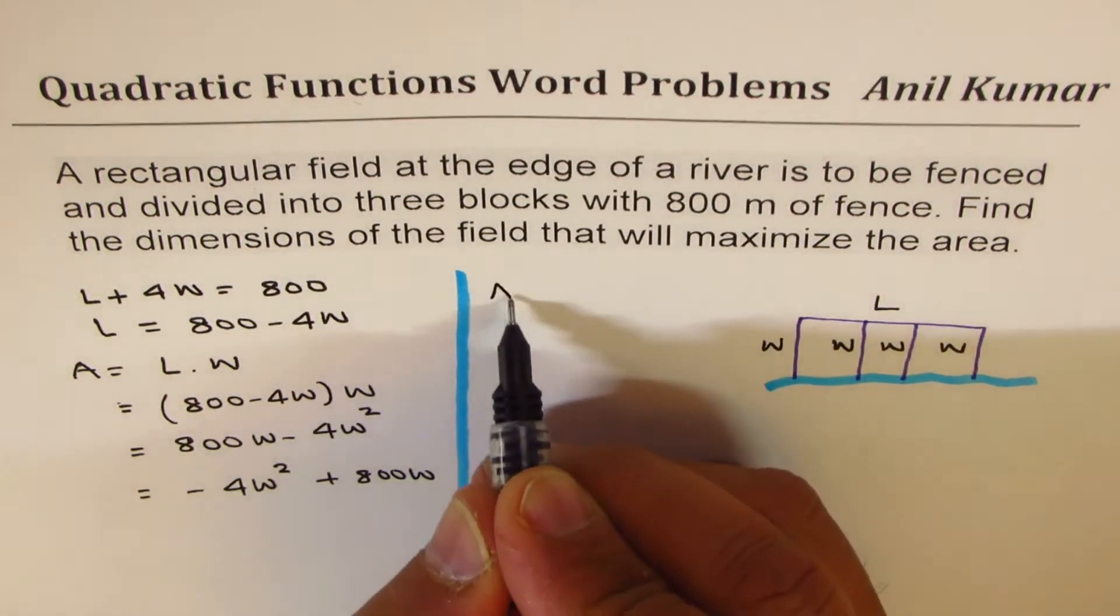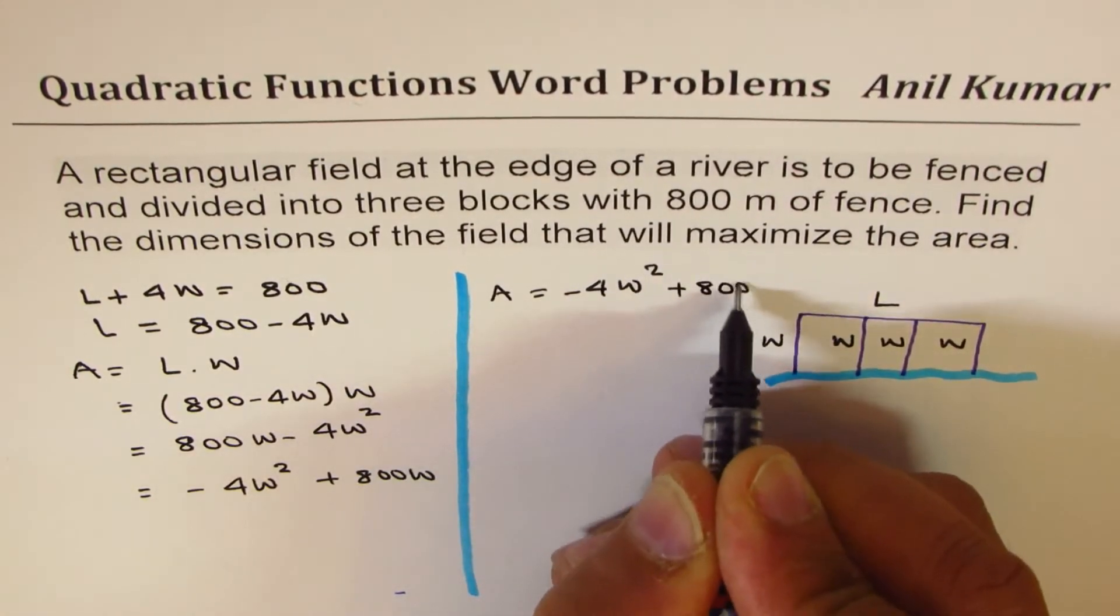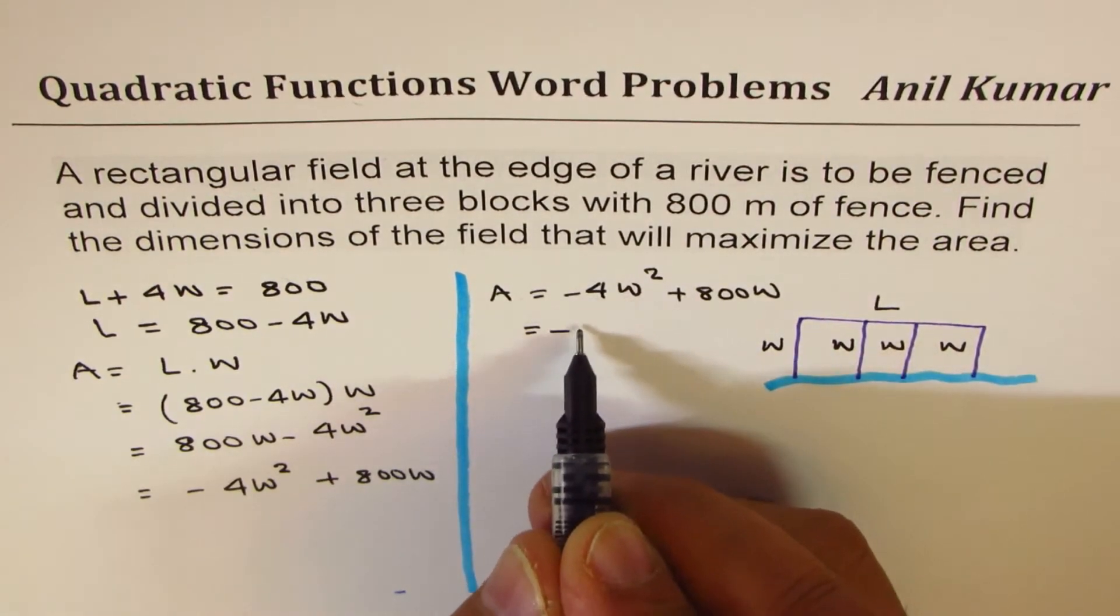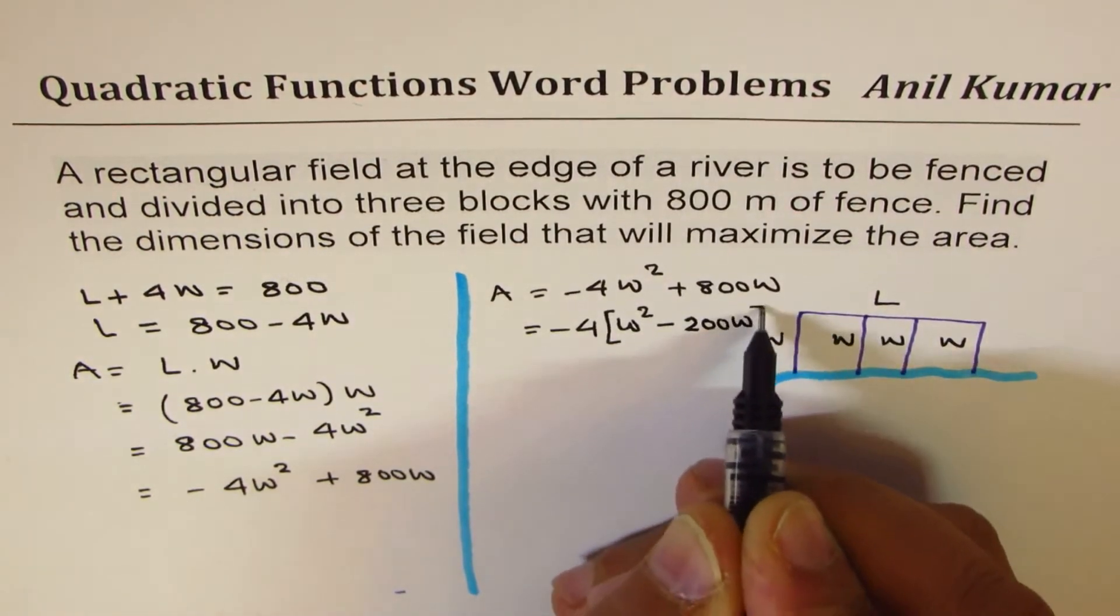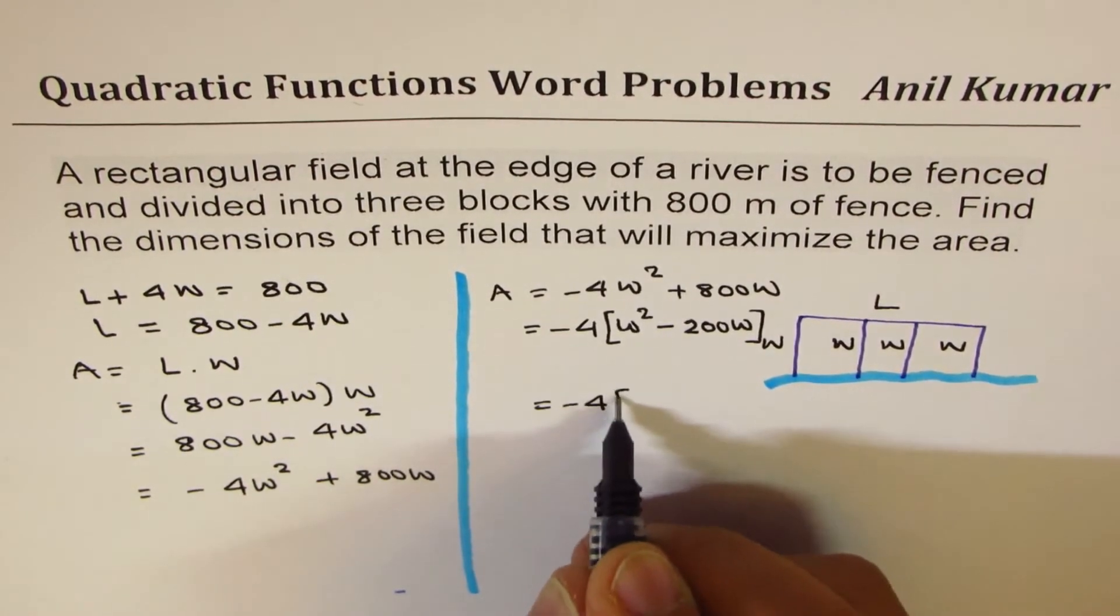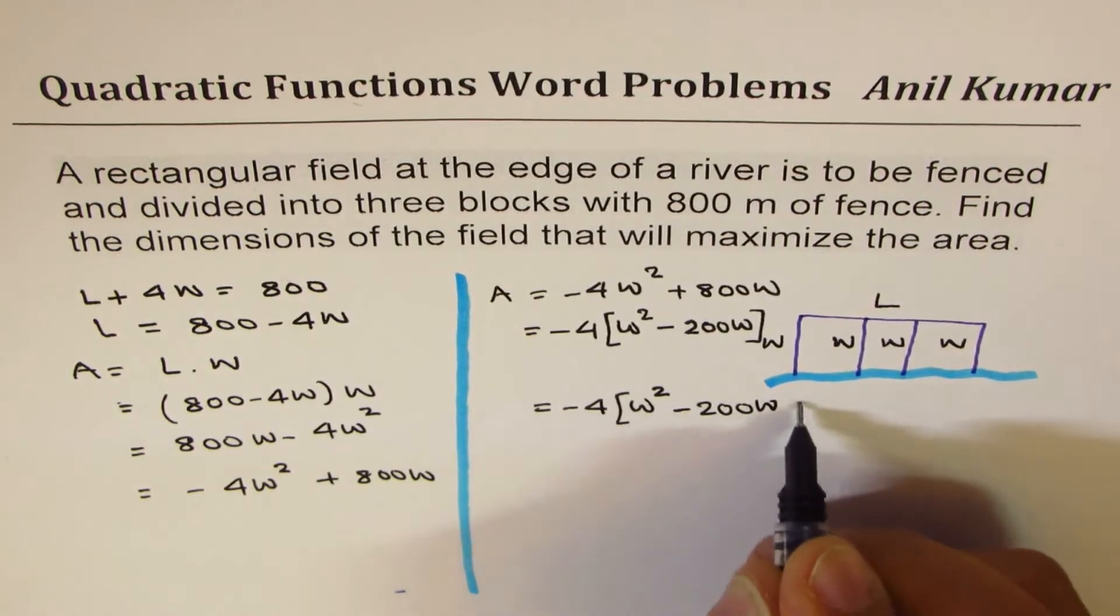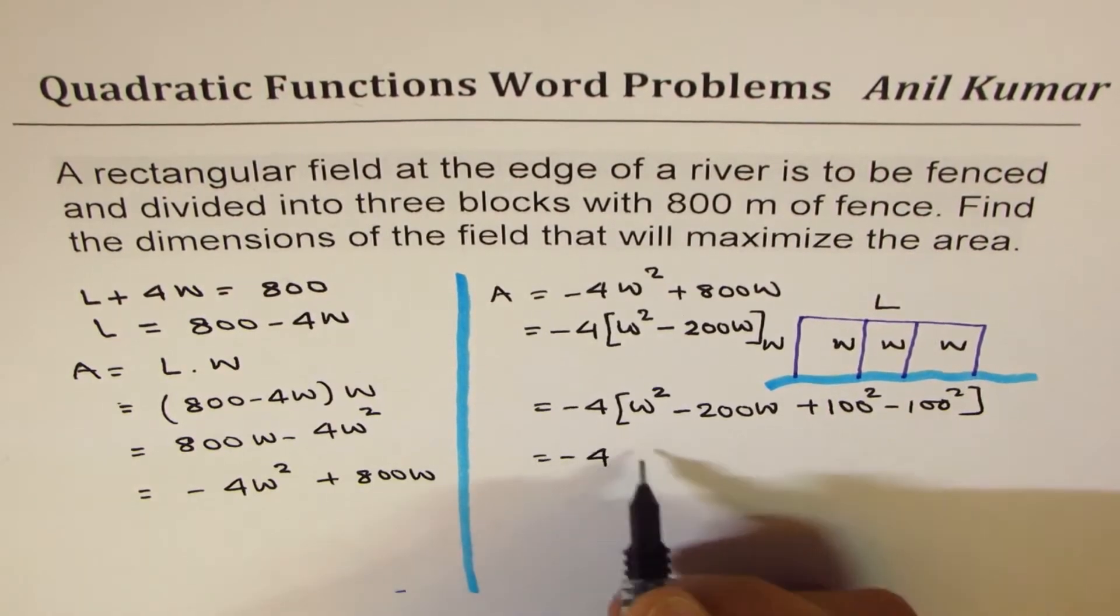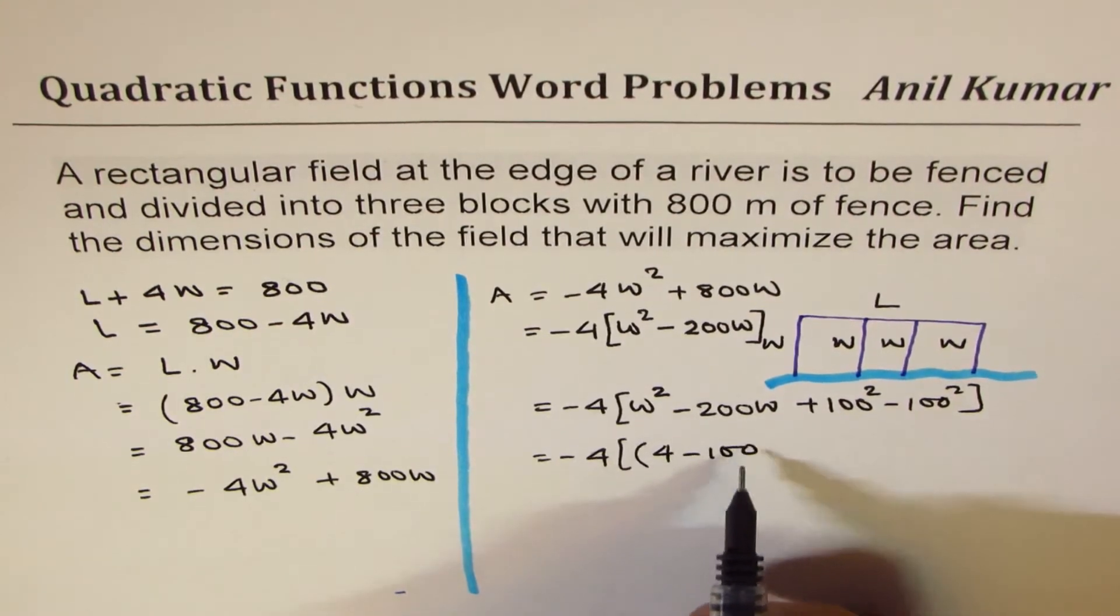So I'll rewrite this equation here: A equals minus 4W² plus 800W. To complete squares we'll take the leading coefficient as common factor, so we get W² minus 200W. Half of 200 is 100, so we are going to add and subtract square of 100. So we have W² minus 200W, add and subtract 100².